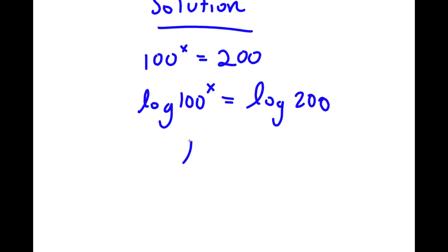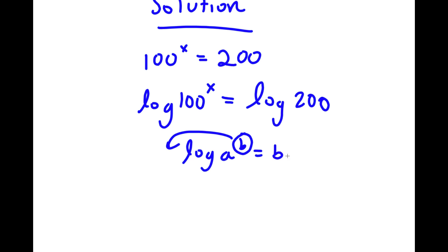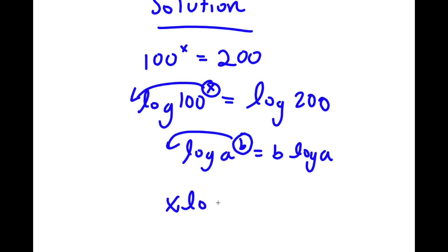Now if I have something in the form log a to the power of b, I can move b to the front, so this equals b times log a. So in this case I can move x to the front. So now I have x times log 100 is equal to log 200.